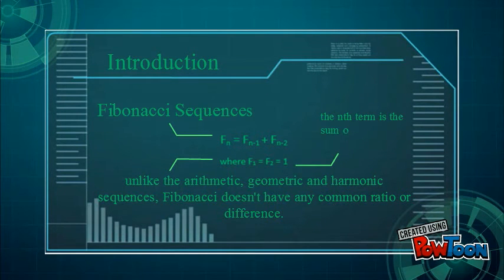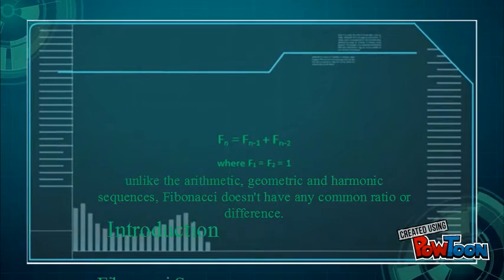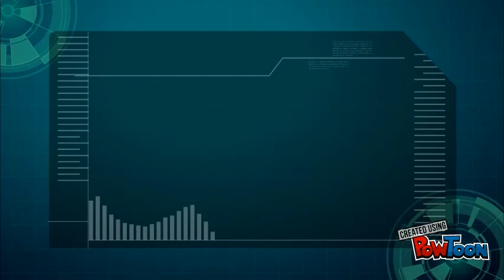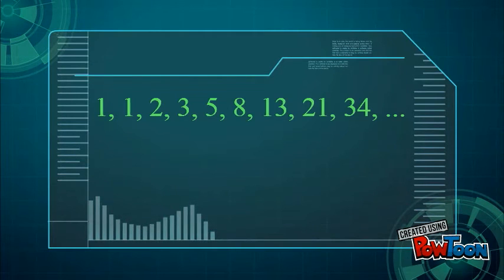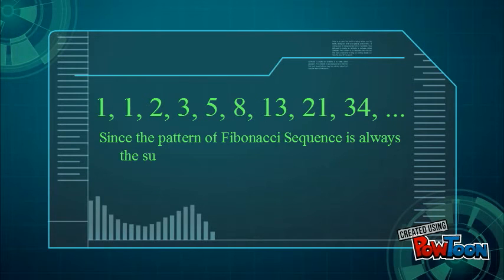Fibonacci sequences: The formula is fₙ = fₙ₋₁ + fₙ₋₂, where f₁ and f₂ = 1. The nth term is the sum of the two previous terms. Unlike arithmetic, geometric, or harmonic sequences, Fibonacci doesn't have any common ratio or difference. Since the pattern is the sum of the two previous terms, keep repeating the pattern.